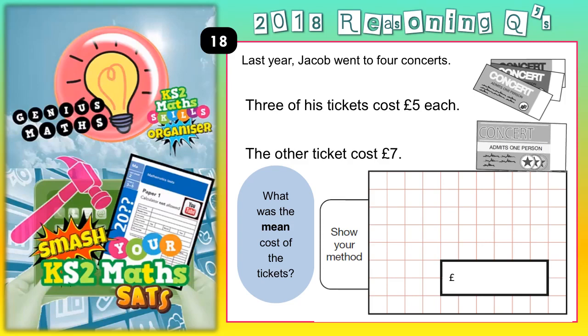Welcome Statsbusters to question 18 — this one is all about averages. Last year Jacob went to four concerts. Three of his tickets cost £5 each, and the other ticket cost £7. So we've basically got four tickets.